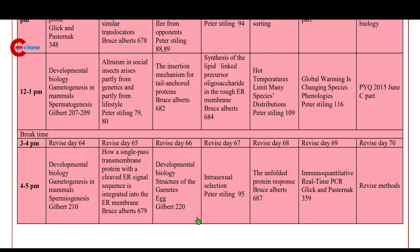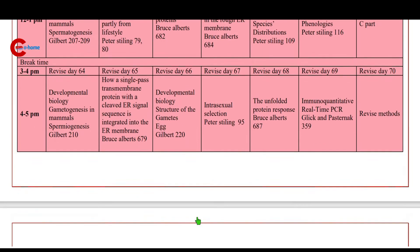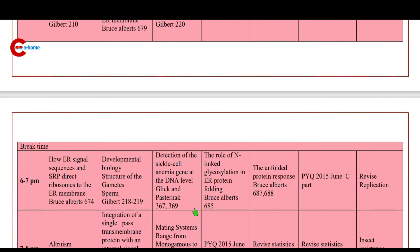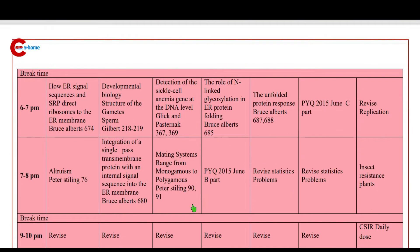6 to 7 p.m.: detection of a sickle cell anemia gene at the DNA level. Then 7 to 8 p.m.: mating systems range from monogamous to polygamous — ecology.